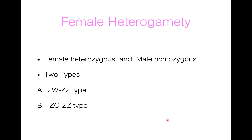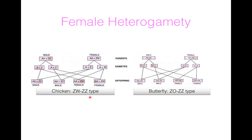Now, female heterogamety. In this, the female is heterozygous but the male is homozygous, because the female produces two types of gametes. There are two types of female heterogamety: ZW and ZZ type, and ZO and ZZ type. First I will explain ZW and ZZ type of female heterogamety, found in chicken.